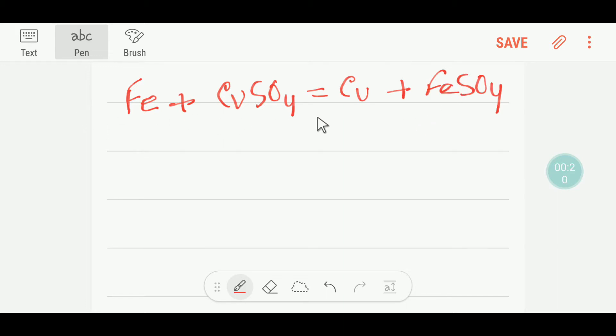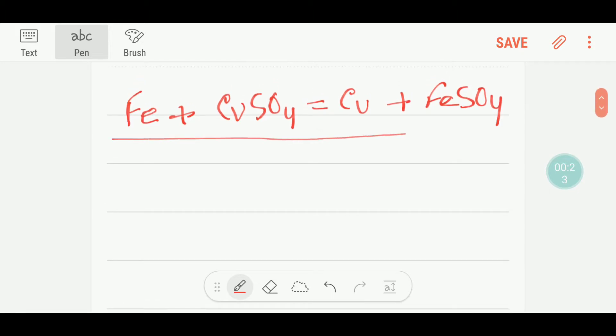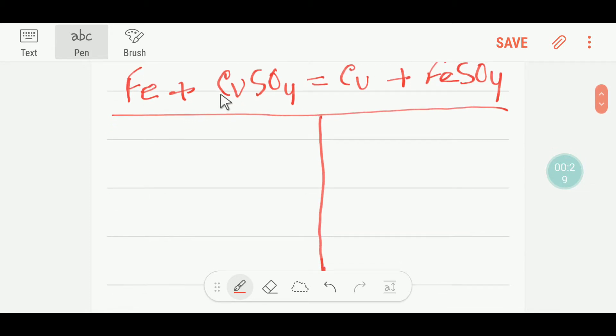However, to balance this equation, I can draw a table like this. So on the left-hand side or reactant side, we have just one iron, we have here one copper atom, and here we have sulfate, that is one. Number of sulfate ions is one, but here the charge is not necessary because we just want to balance.